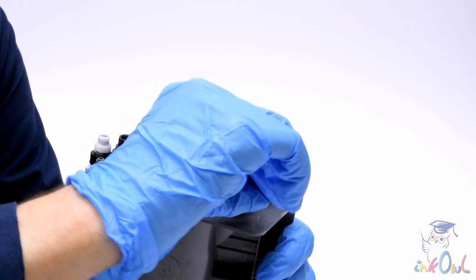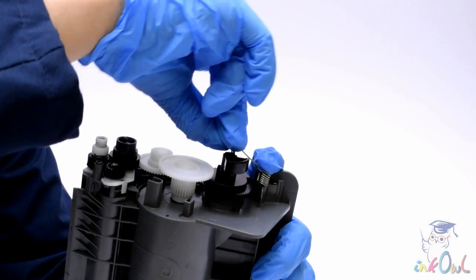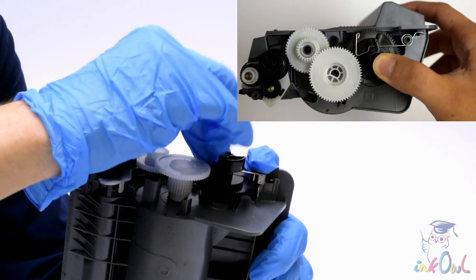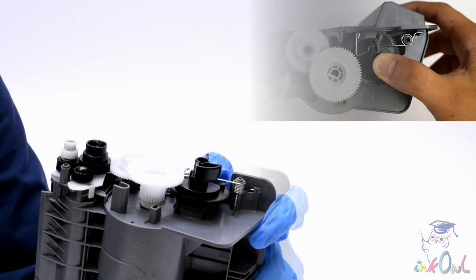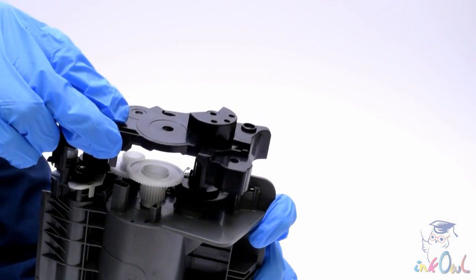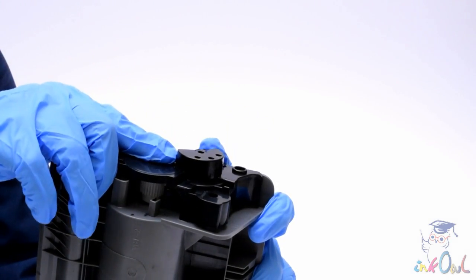Step 9: Hook the spring loop onto the flag gear, like this. Step 10: Reattach the cartridge end cap to lock everything into place.